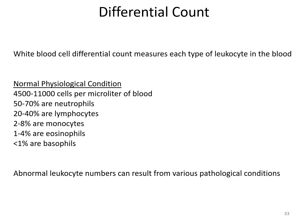The white blood cell differential count measures each different type of leukocyte in the blood. Under normal conditions, there should be 4,500 to 11,000 cells per microliter of blood. Normal percentages: 50 to 70% neutrophils, 20 to 40% lymphocytes, 2 to 8% monocytes, 1 to 4% eosinophils, and less than 1% basophils. Abnormal leukocyte numbers can indicate a pathological condition. Leukopenia is a reduced number of leukocytes, putting individuals at higher risk of infection. Leukocytosis is an elevated leukocyte count, expected after a recent infection.